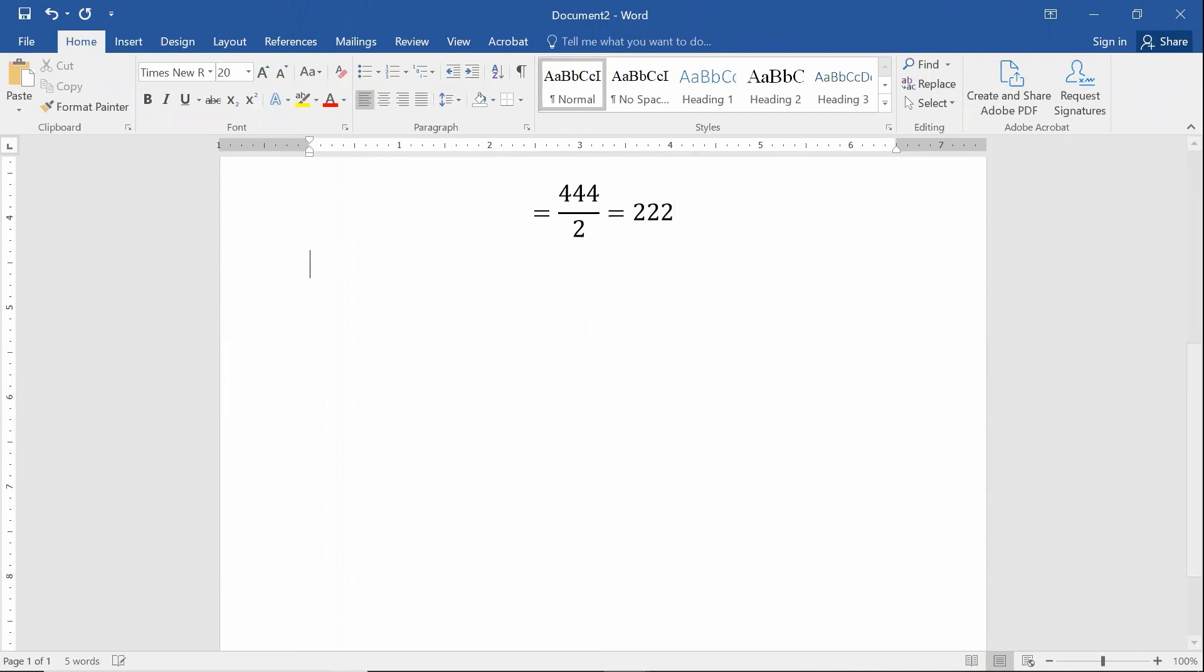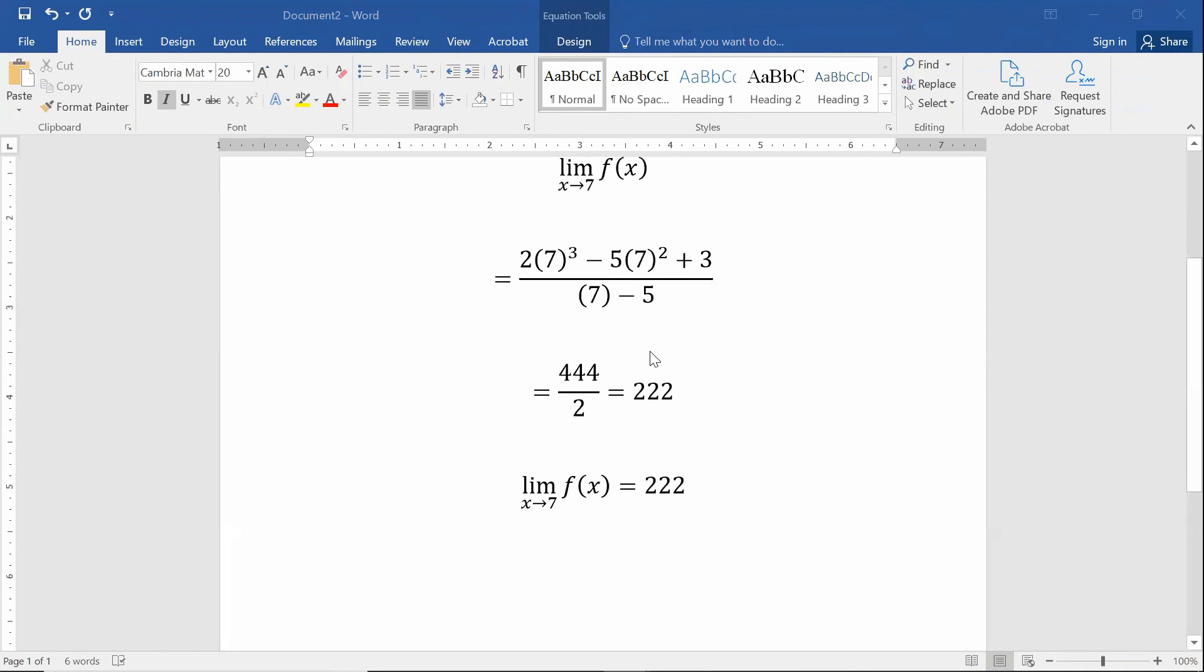So if I were to write that properly, what I would write is limit of f of x as x goes to 7 is 222. So that's how we can use those rules of limits analytically to really shorten up how much work I have to do when finding limits of polynomial functions and finding limits of rational functions whose denominator is not zero.